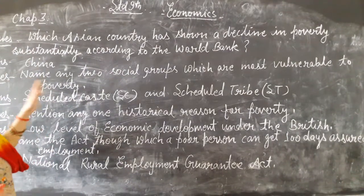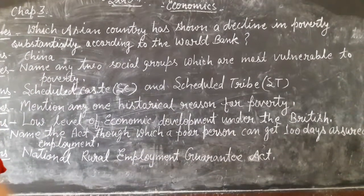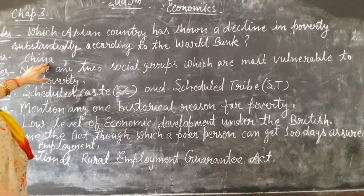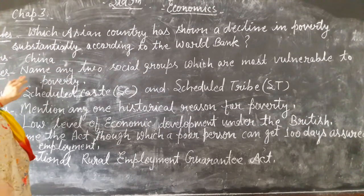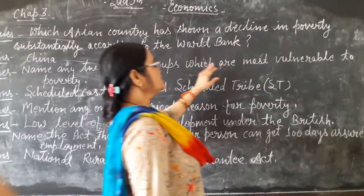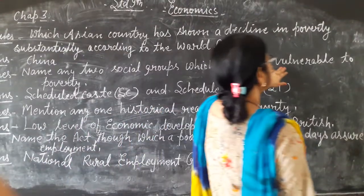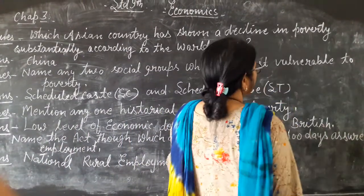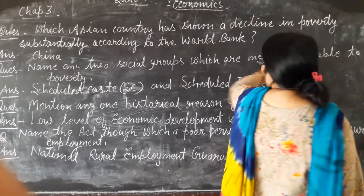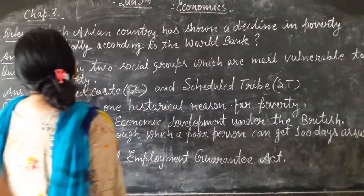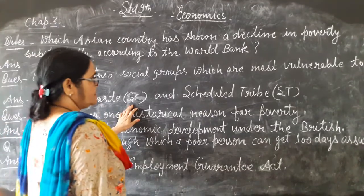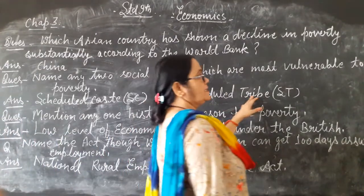Which Asian country has gone or declined in poverty? China. Next question: name two social groups which are most vulnerable to poverty. Schedule Class, running SC, and Scheduled Tribes, ST.